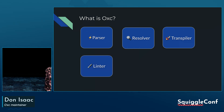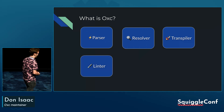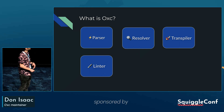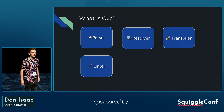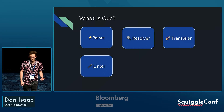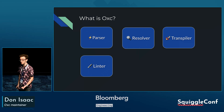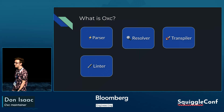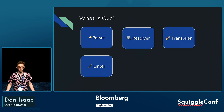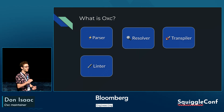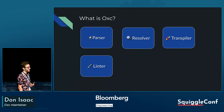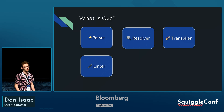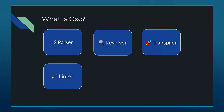We also have a linter. Depending on how many plugins you use, it's about 50 to 100 times faster than ESLint. We have over 400 rules natively supported with zero config and 11 ESLint plugins, mainly the ones that are very popular on NPM. Our coolest one, in my opinion, is the import plugin where we can detect no cycles and things like that.